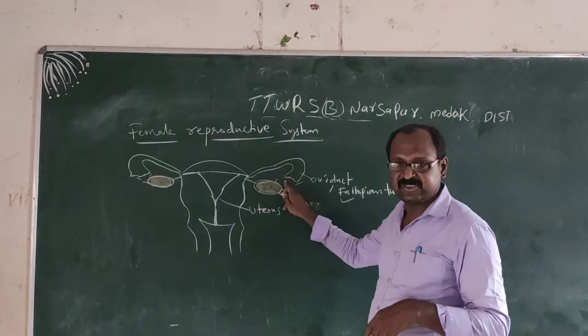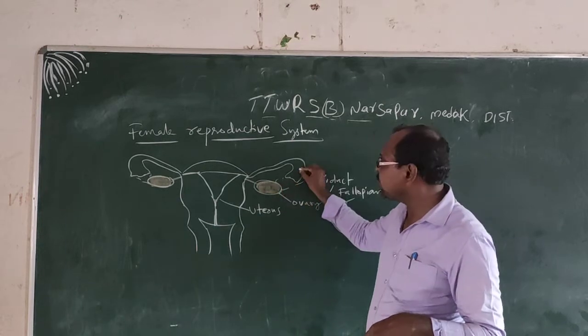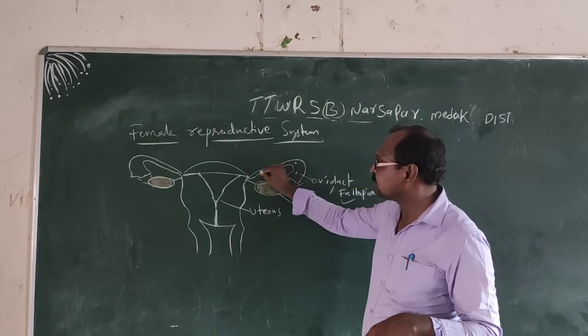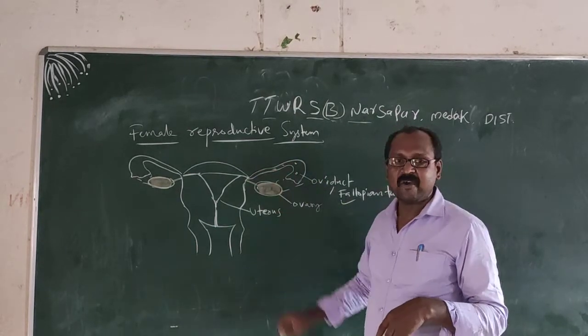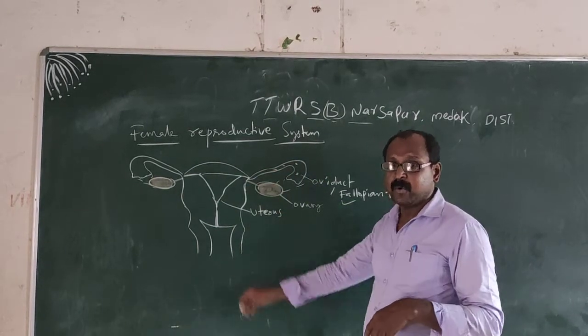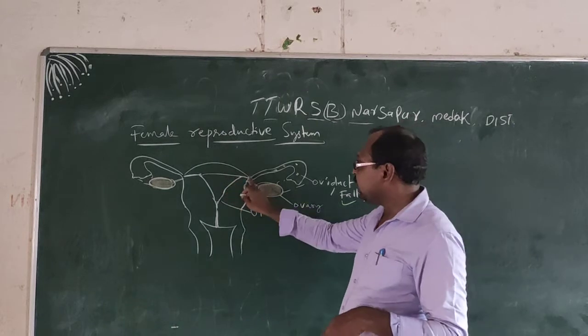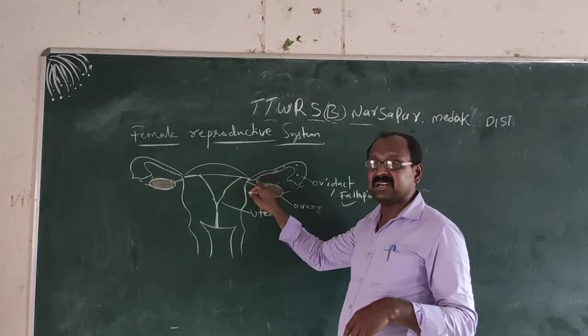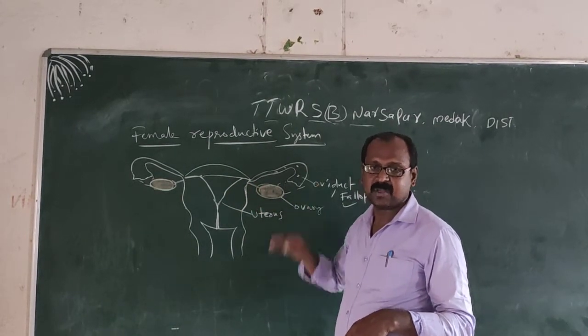In this region, the egg slowly travels along the fallopian tube, and at the end of the tube, fertilization occurs.